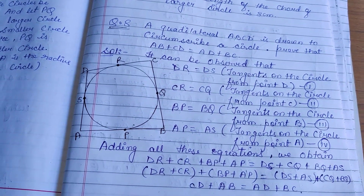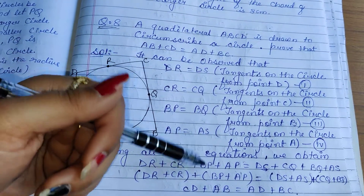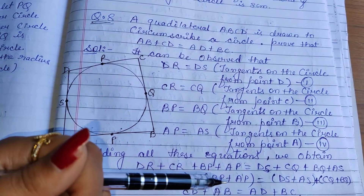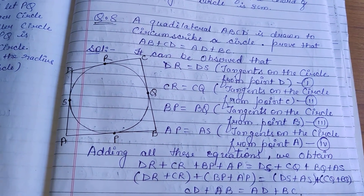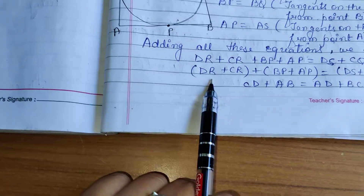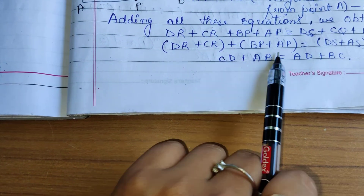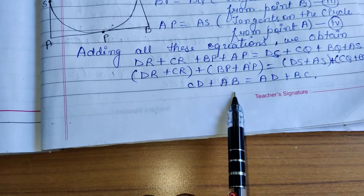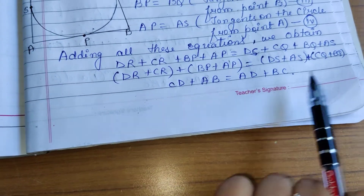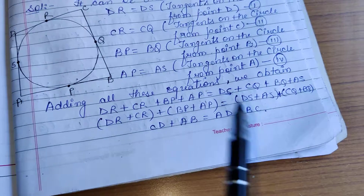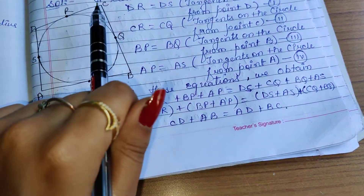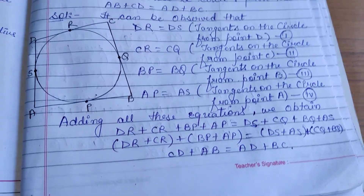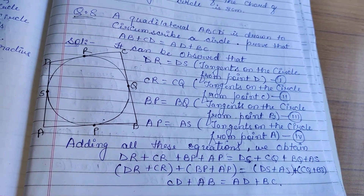Adding all four equations, we add the left-hand sides together and the right-hand sides together: DR + CR + BP + AP = DS + CQ + BQ + AS. Now, DR + CR gives us CD, BP + AP gives us AB, DS + AS gives us AD, and CQ + BQ gives us BC. Therefore, AB + CD equals AD + BC, which is what we needed to prove.